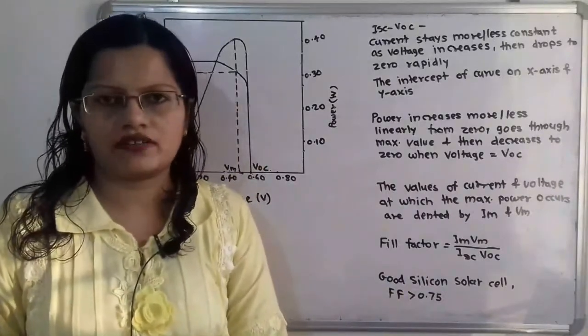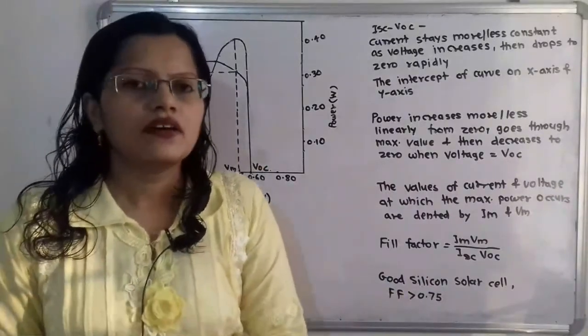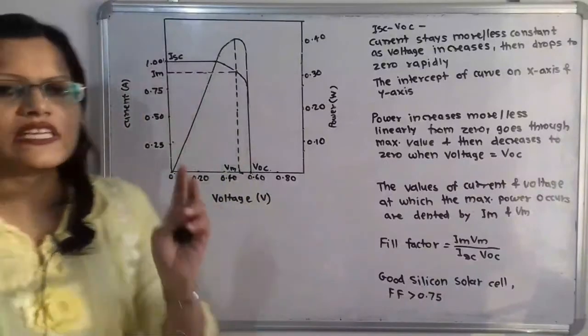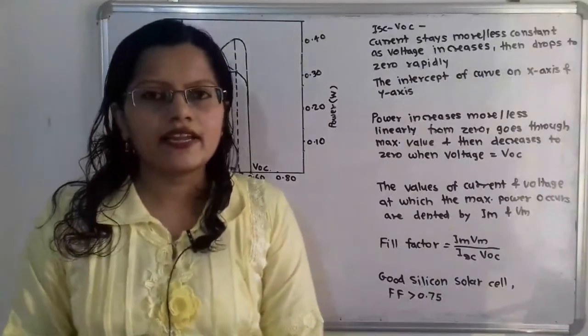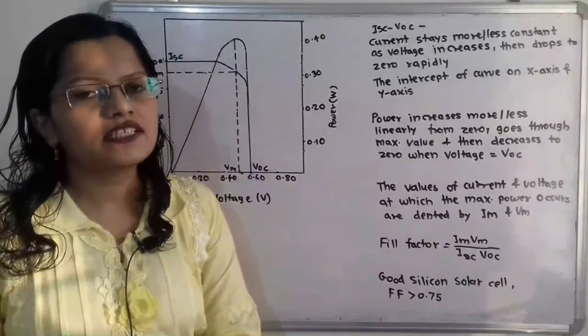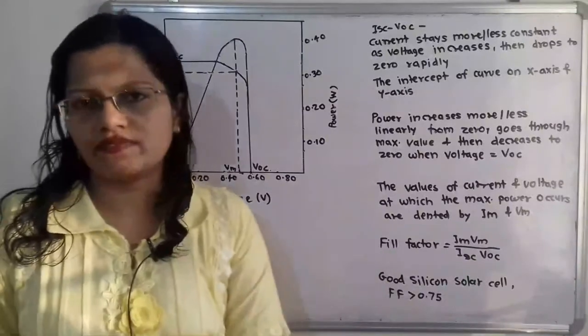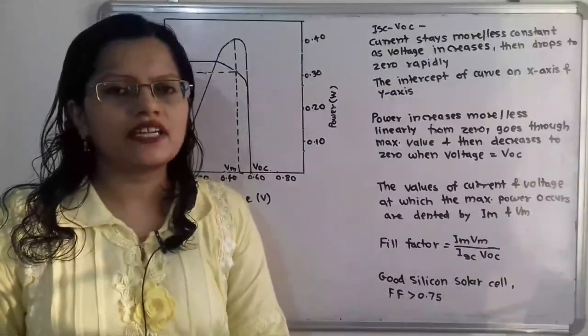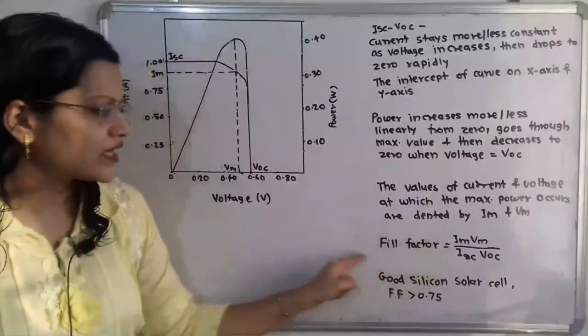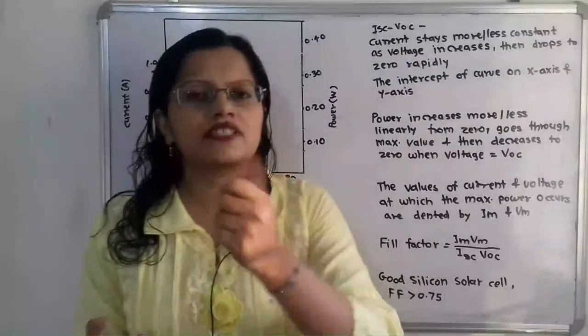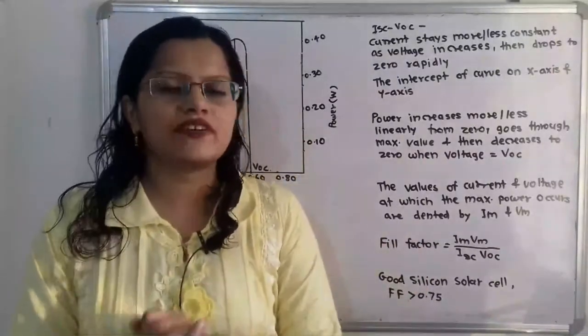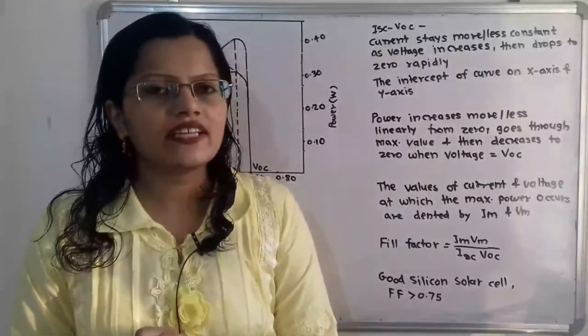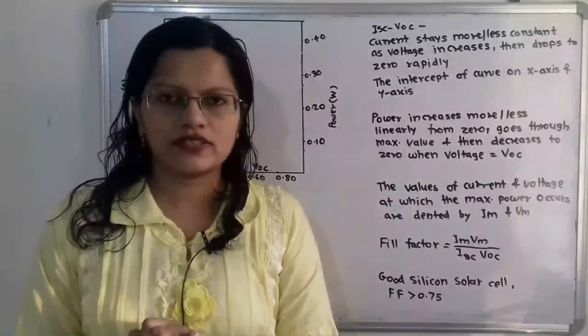So when we take the good silicon solar cell, then this fill factor is greater than 0.75. So we can understand from this, when the answer or the calculation of this fill factor is more than 0.75, then we can say that it is a good solar cell.